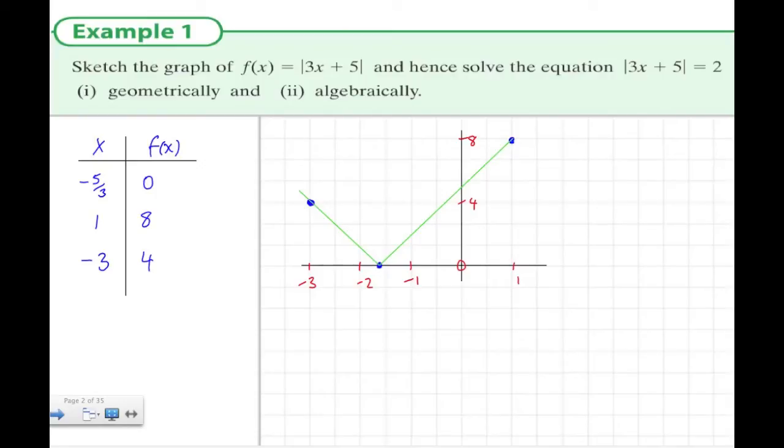In the second part, we use a geometric technique to find out when this equals 2. We mark off where 2 is, come across and see where it hits our function marked in green. It seems to be hitting at minus 1, and the other value seems to be maybe minus 2 and a third, minus 2.3. When the modulus of 3x plus 5 equals 2, x equals minus 2.3 or minus 1. That's the geometric technique.